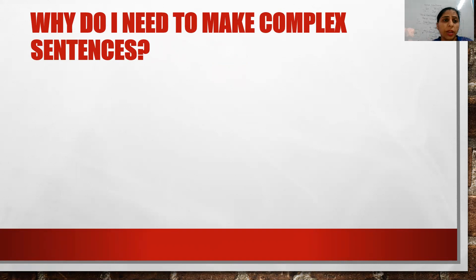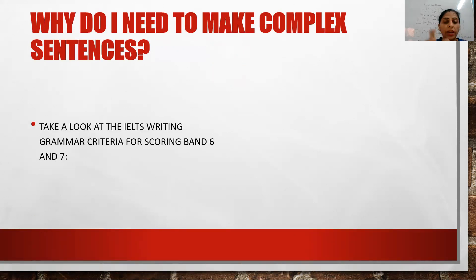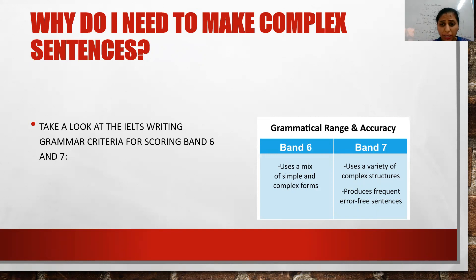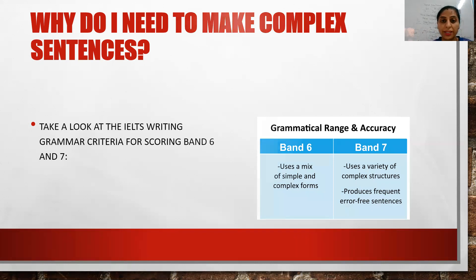Why do we need to make complex sentences? If you look at the grammar criteria for scoring band six and band seven, you'll find it requires a mix of simple and complex forms. It means using simple sentences and complex structures with variation. You cannot just use connectors all the time. For band seven, you use a variety of complex structures and produce frequent error-free sentences — grammatically correct sentences without any grammatical mistakes.